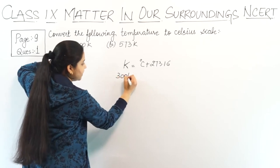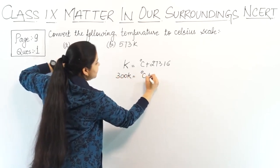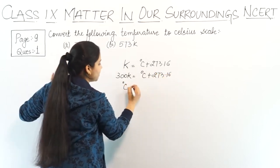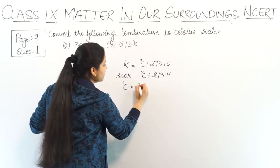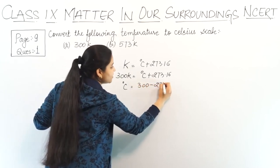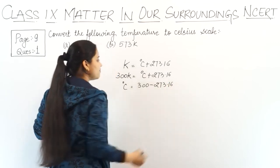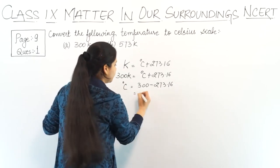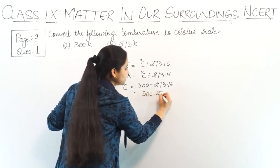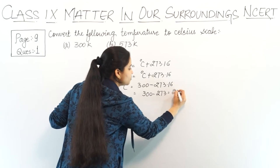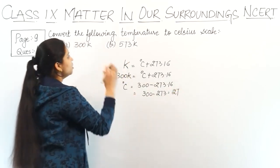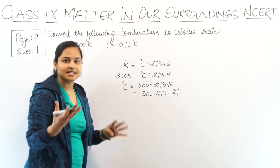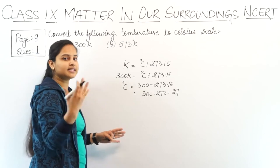So 300 Kelvin equals degree Celsius plus 273.16. Therefore, degree Celsius equals 300 minus 273, which equals 27. So 300 Kelvin converted to degree Celsius is 27 degrees Celsius.